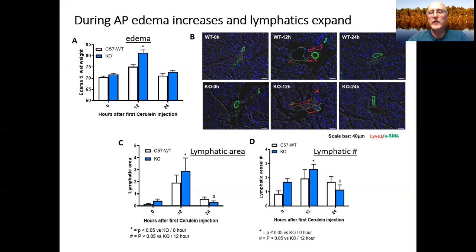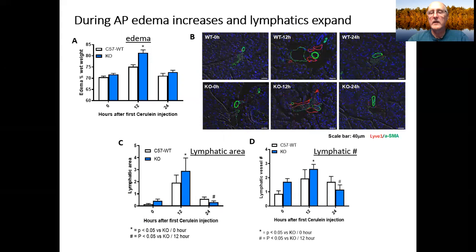We looked at D, lymphatic vessel number. There was, again, an increase at 12 hours in the wild-type as well as in the knockout in blue, which was more significant. These two parameters decreased by 24 hours.